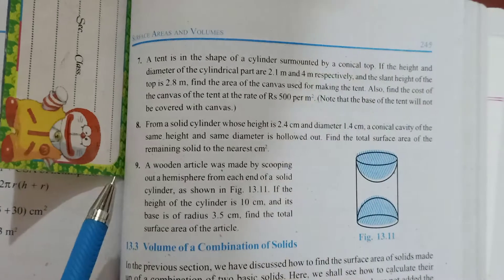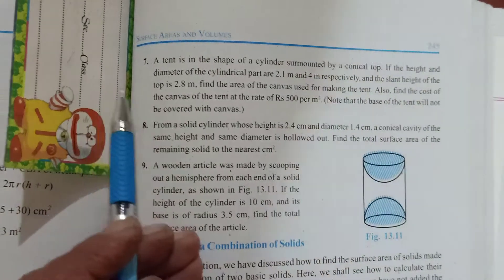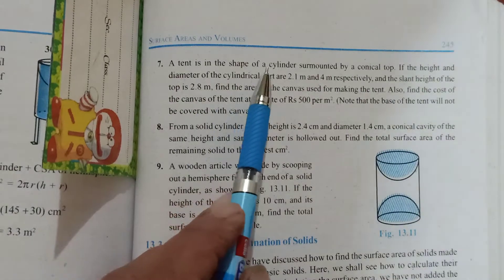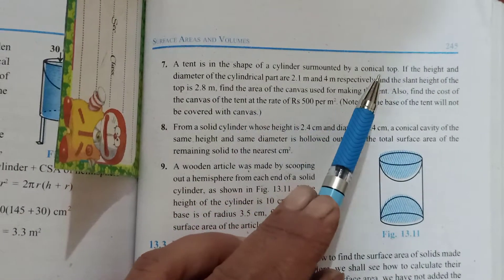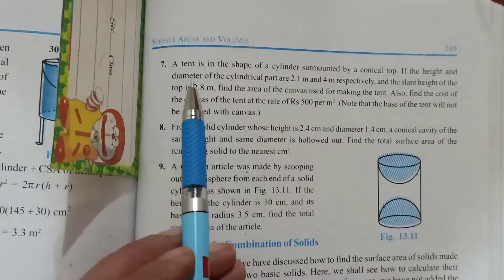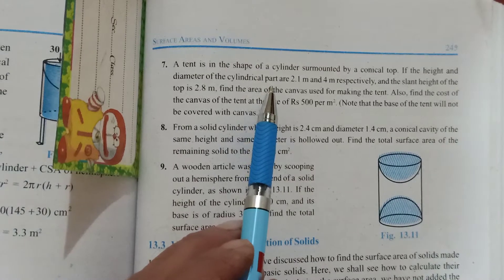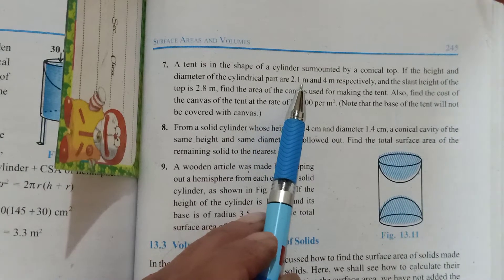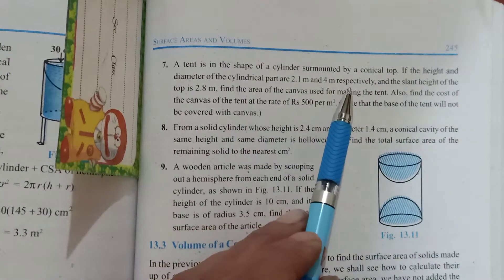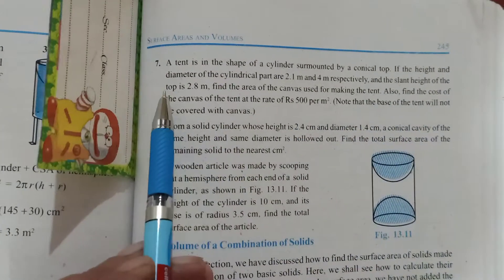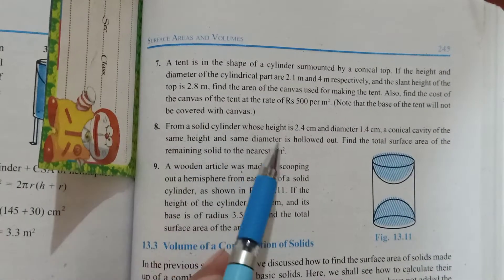Starting with question number 7, 8, 9 that were left from here. So, a tent is in the shape of a cylinder surmounted by a conical top. If the height and diameter of the cylindrical part are 2.1 and 4, then the slant height of the top, that is the conical slant height L, is 2.8.